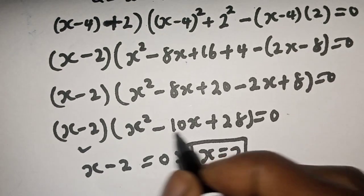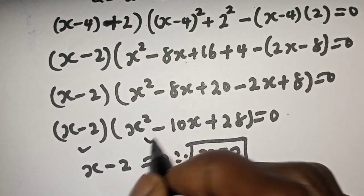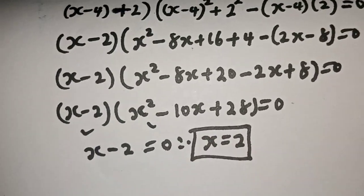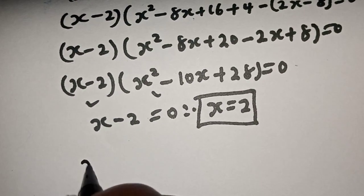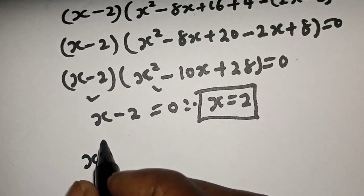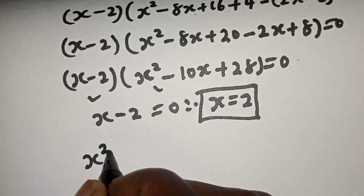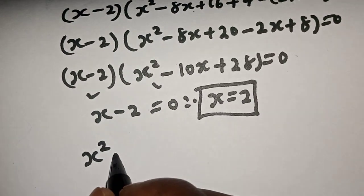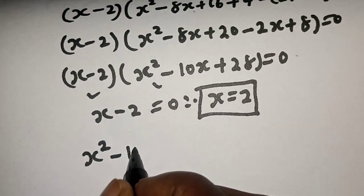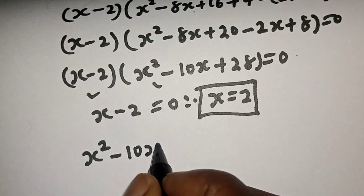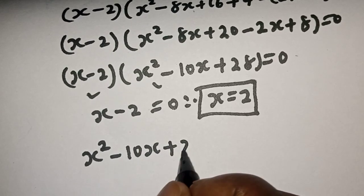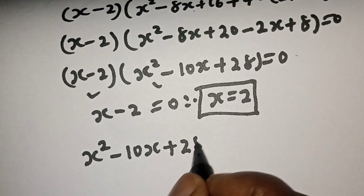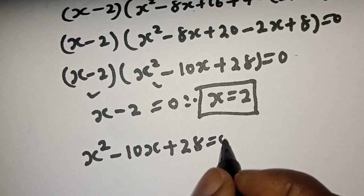And from here is the second case. The second case: we have x squared minus 10x plus 28 is equal to 0.